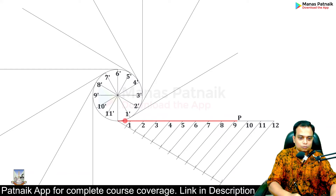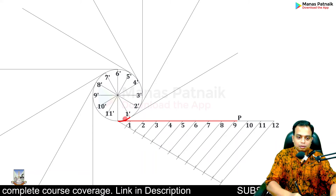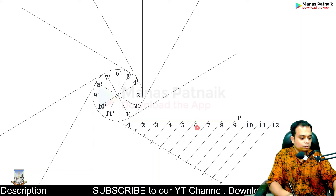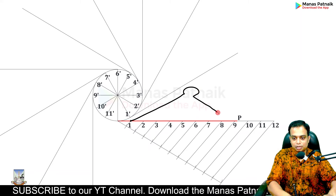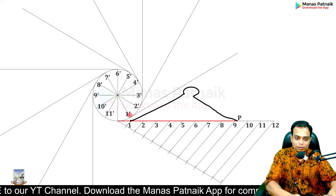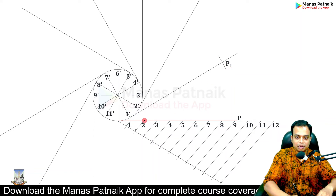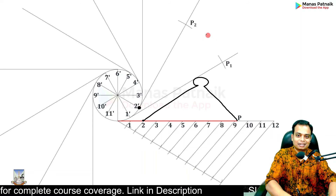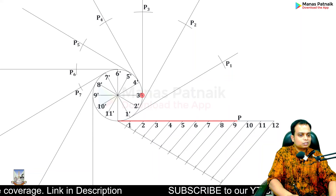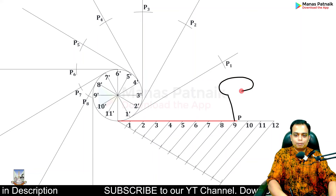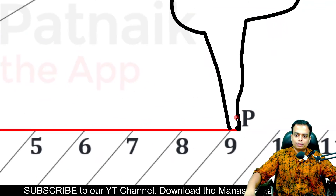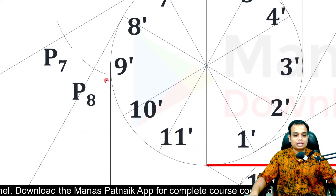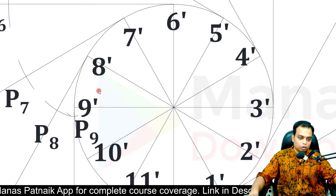Once you have wound the string this much, the portion left — the free length — runs from point 1 to point P. Keep the steel end of your compass at point 1 and the pencil end at P; with 1-dash as center, cut an arc to get P1. Similarly, steel end at point 2 and pencil end at P; with 2-dash as center, cut an arc to get P2. Repeat this for P3, P4, P5, P6, P7, P8, and finally from point 9 to P with 9-dash as center — this arc is extremely small — to get P9.